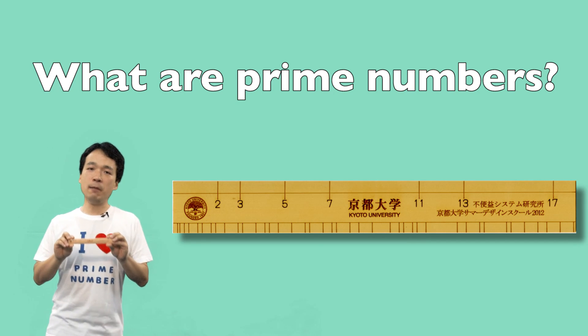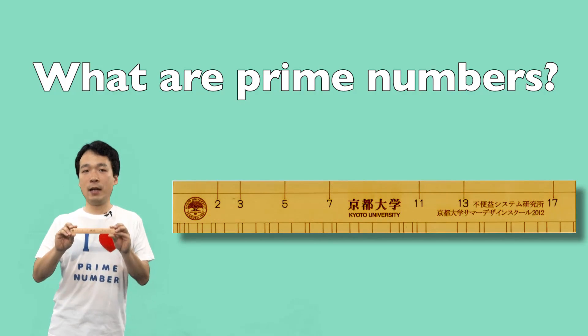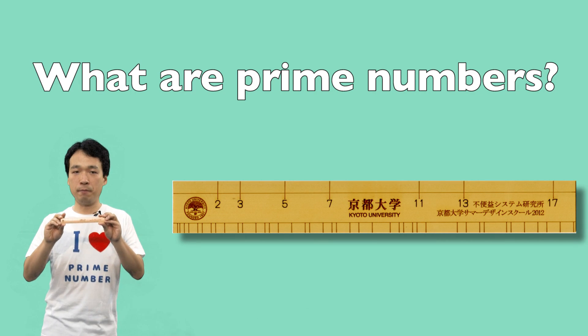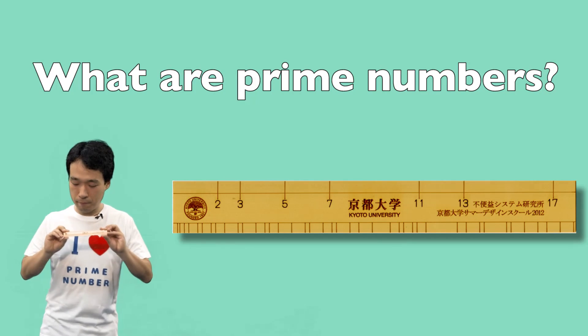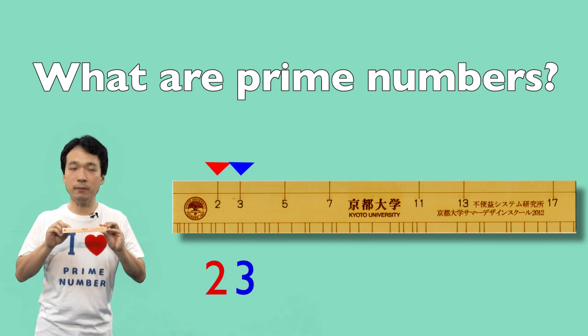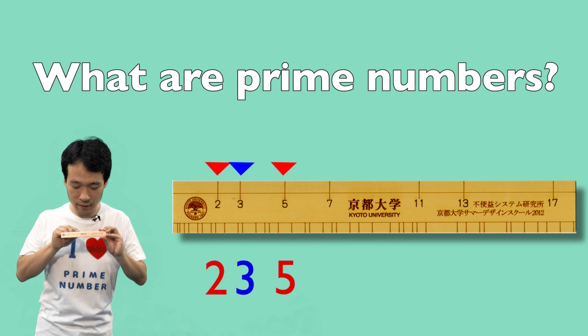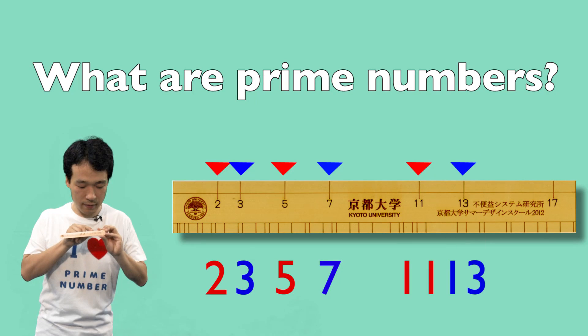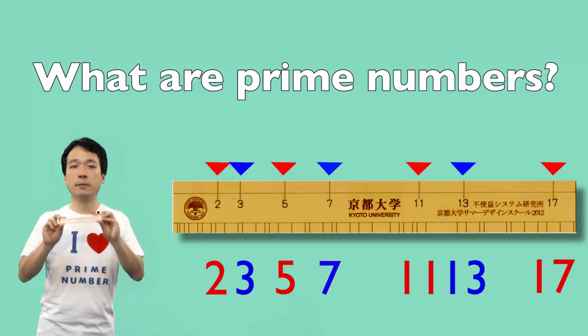A prime number is a positive integer divisible only by one and itself. For example, 2 and 3 are prime numbers. 5, 7, 11, 13, 17 are prime numbers.